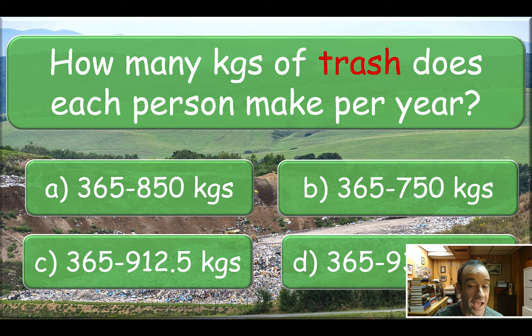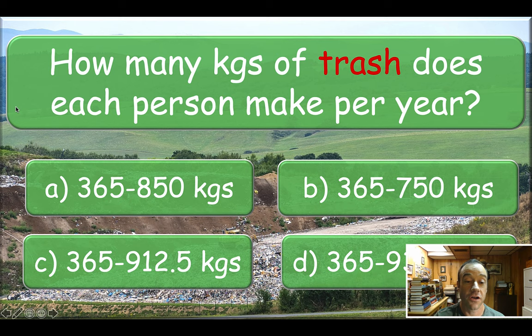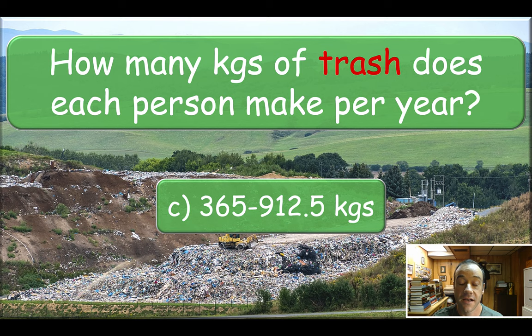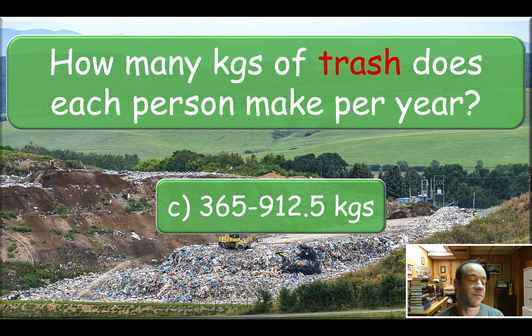How many kilograms of trash does each person make per year? They need to take the number they just had and multiply it by the amount of days in the year, which should be 365. They're already going to know 365 is the beginning of the range. If they can do the math — and Chinese students love to do math — they can figure out that it should be C, because 2.5 multiplied by 365 equals 912.5 kilograms. You can leave a comment below if wherever you are, students also like to do that.